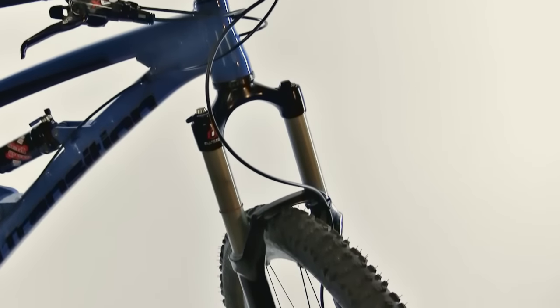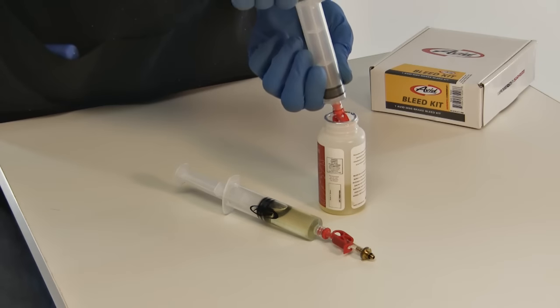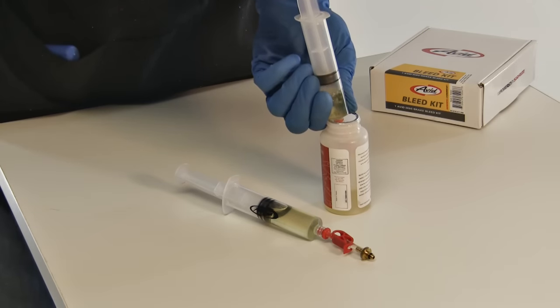Before you get started, make sure that the bike is oriented so that the brake lever is higher than the brake caliper. Fill one syringe one half full of Avid brake fluid and the other syringe one quarter full.